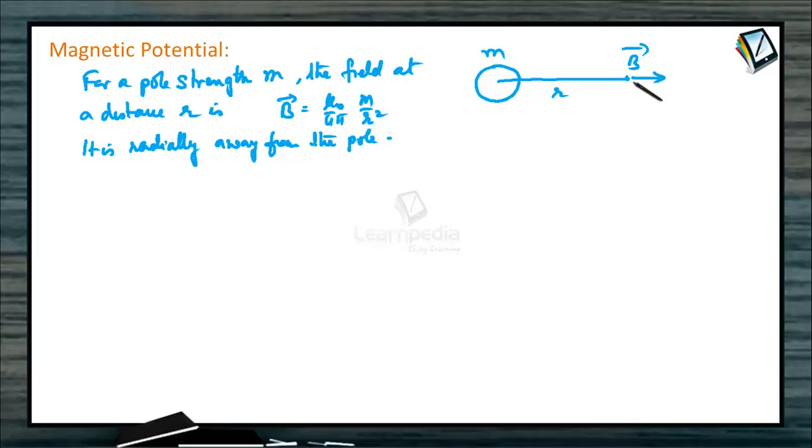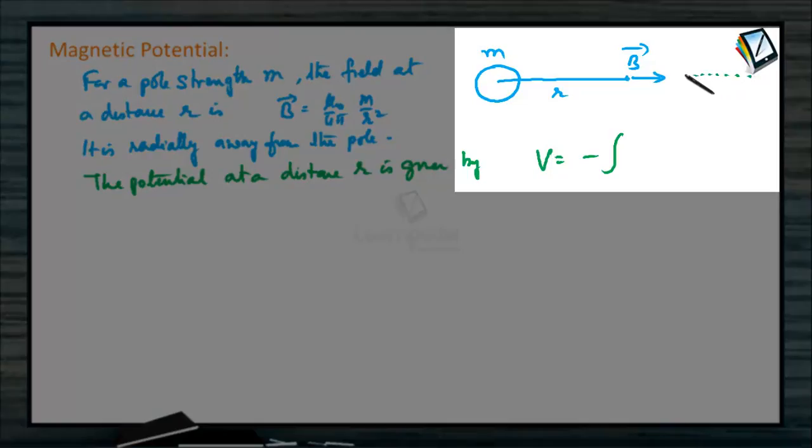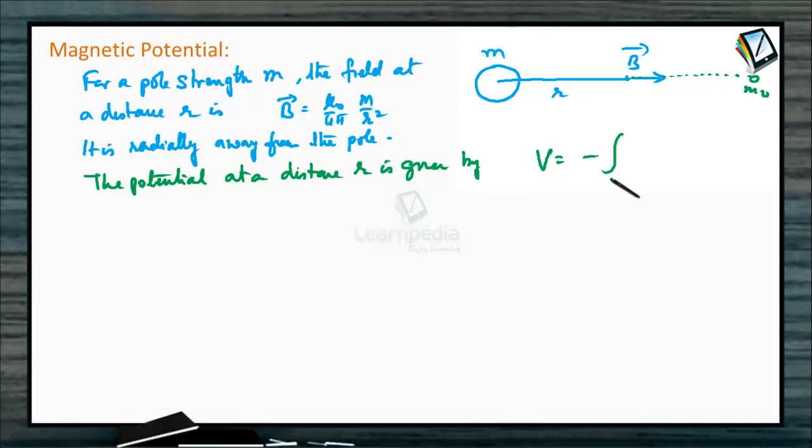The potential at a distance R is given by V equals minus—as if the test pole is brought from infinity and kept at this point. This is M naught. So bring it from infinity to R.